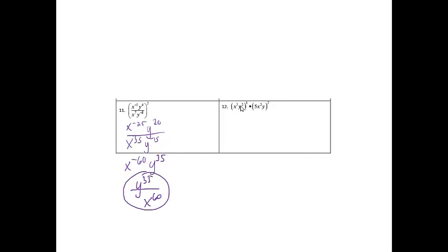Alright, problem 12. A few things going on here. First of all, I need to take care of my parentheses, so I'm going to go ahead and multiply. I'm going to get x to the 24, y to the 16. And then on this one, the 5, remember it has a 1, so the power is 1. So if I multiply, I'm going to get 5 to the 2nd, x to the 4th, y to the 2nd.